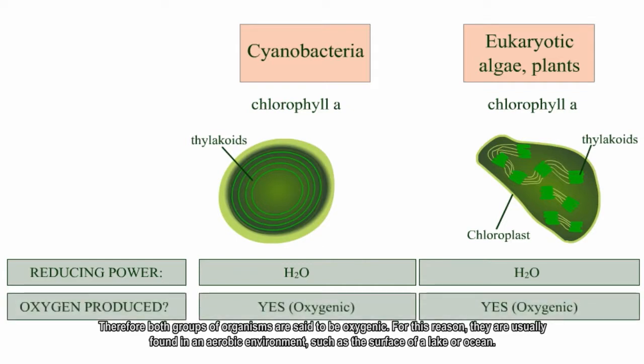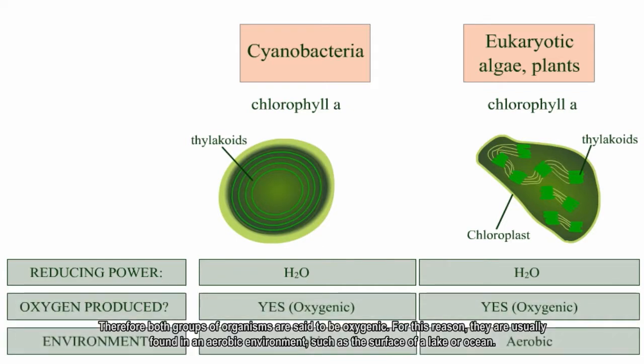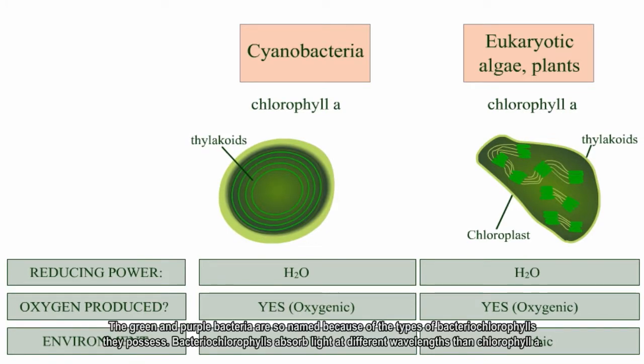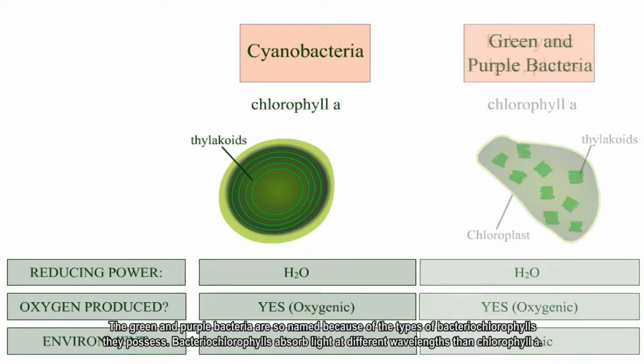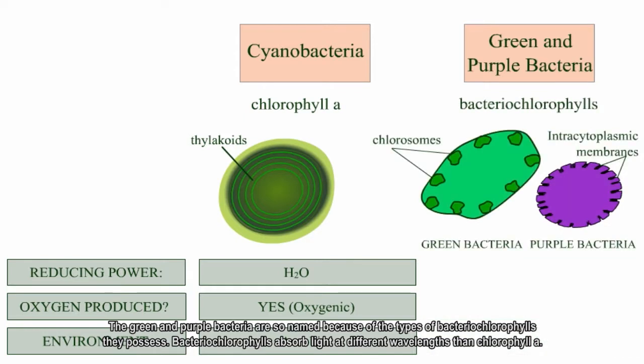For this reason, they're usually found in an aerobic environment, such as the surface of a lake or ocean. The green and purple bacteria are so named because of the types of bacteriochlorophylls they possess. Bacteriochlorophylls absorb light at different wavelengths than chlorophyll A.